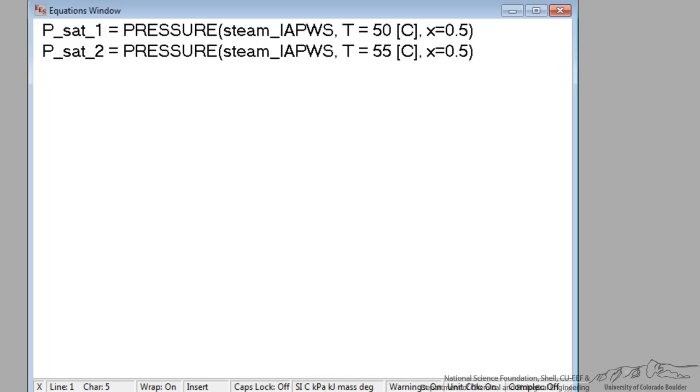So here are two commands in EES that will recreate the tables in the back of your book. Instead of using water it uses a function called steam IAPWS and that is a more accurate equation of state than using either water or using steam for example. So let's use steam IAPWS to recreate the steam tables themselves.